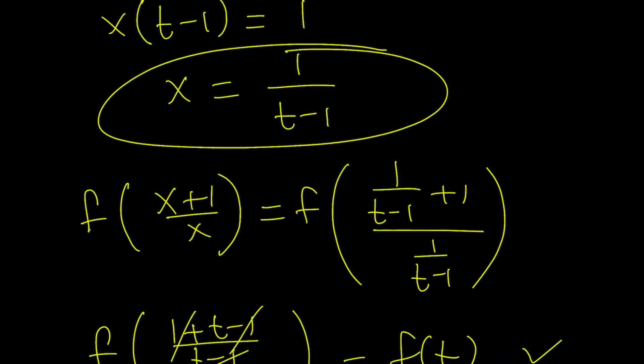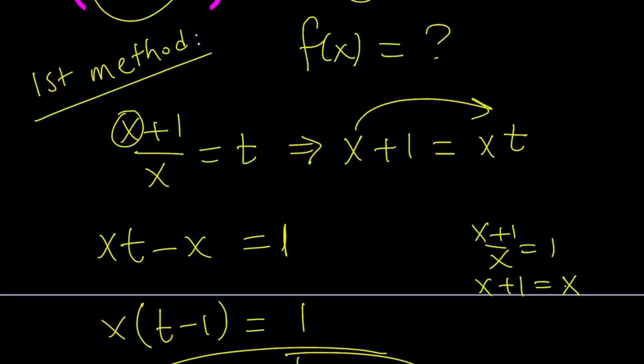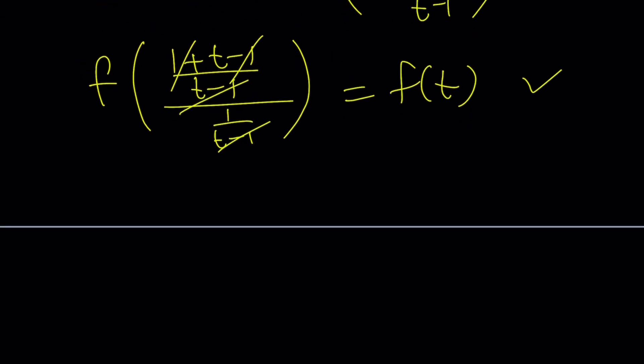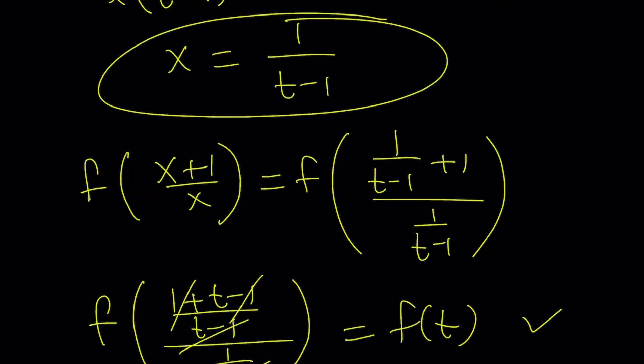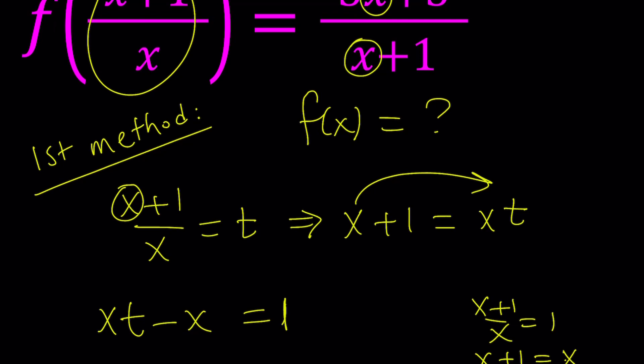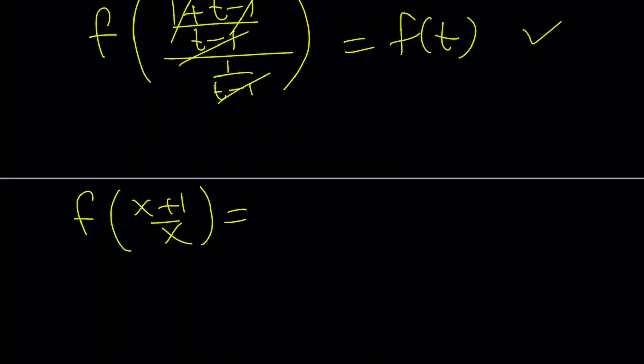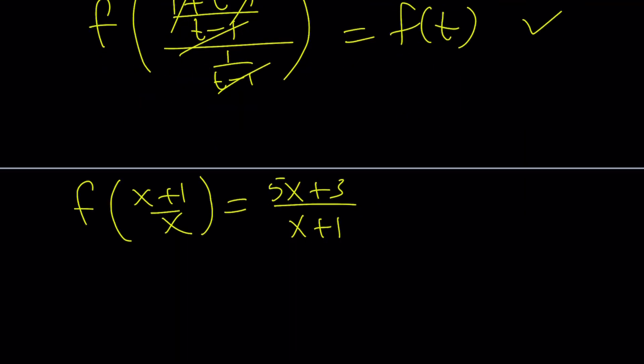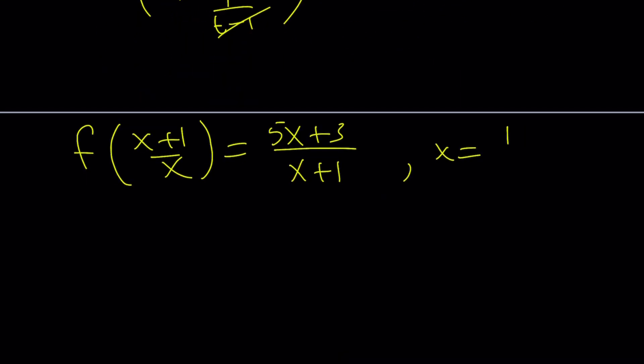Anyways, so we did that replacement on the left, but we also have to do it on the right-hand side. So let's summarize what we're doing. We got this expression that is equal to (5x+3)/(x+1). And then I'm replacing x with 1/(t-1) on both sides. We know that on the left it's going to give me f(t), needless to say. And then on the right-hand side, we've got to figure it out.